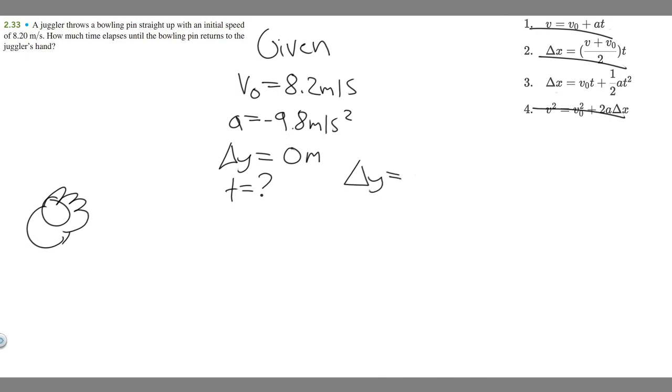So the equation we're going to use is delta y equals v sub zero times t plus one half at squared. So we're going to use this to solve. All we have to do is plug in our variables.